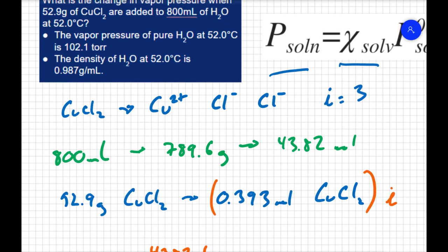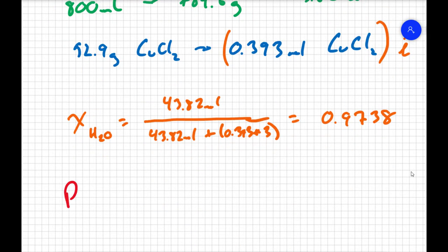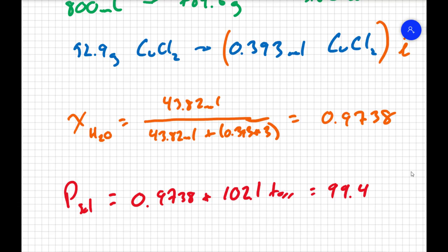Now we can finish it up. I know that the vapor pressure is 102.1 for pure water. So my pressure for the solution is going to be my mole fraction of the solvent, 0.9738, times the vapor pressure of the pure solvent, 102.1 torr. And I get 99.4 torr for my new vapor pressure.